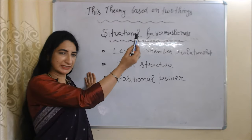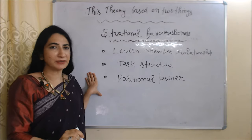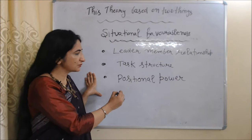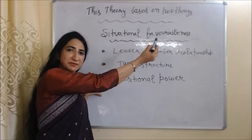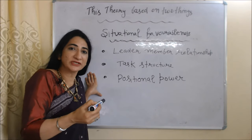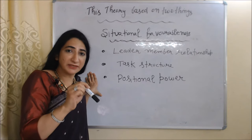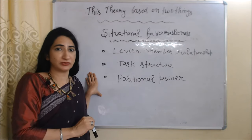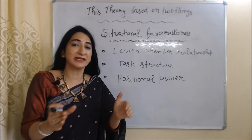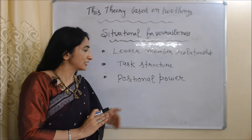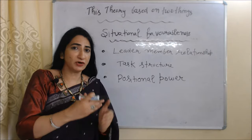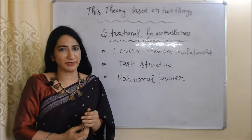Now we are going to talk about situational favorableness. Situational favorableness depends on three things: first is leader-member relationship, second is task structure, and last is positional power. Leader-member relationship means how much trust team members have in their leader — if they trust the leader, it will be a favorable situation. If team members have proper task clarity, that will also be favorable. And if positional power is high, that too is favorable for the leader.